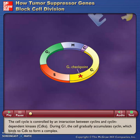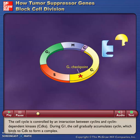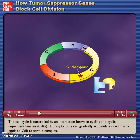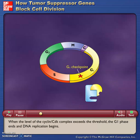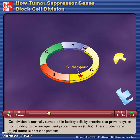The cell cycle is controlled by an interaction between cyclins and cyclin-dependent kinases. During G1, the cell gradually accumulates cyclin, which binds to CDK to form a complex. When the level of the cyclin-CDK complex exceeds the threshold, the G1 phase ends and DNA replication begins.